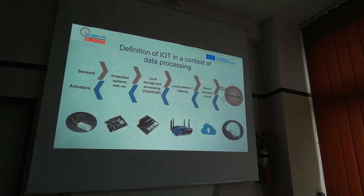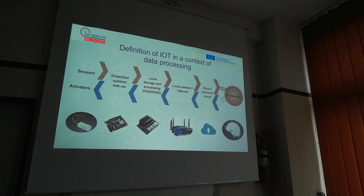This information goes backwards from the cloud through the local network or internet, through the edge and the fog, to the embedded systems, and perhaps there's an actuator — for example, a servo motor closing a window or opening a heating valve, or an infrared emitter starting an air conditioning unit. Measure, process data, get use of it, and act — this is how the IoT ecosystem works.